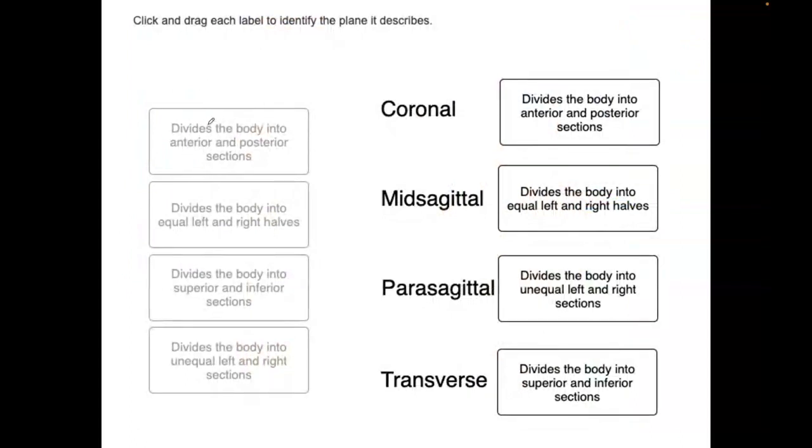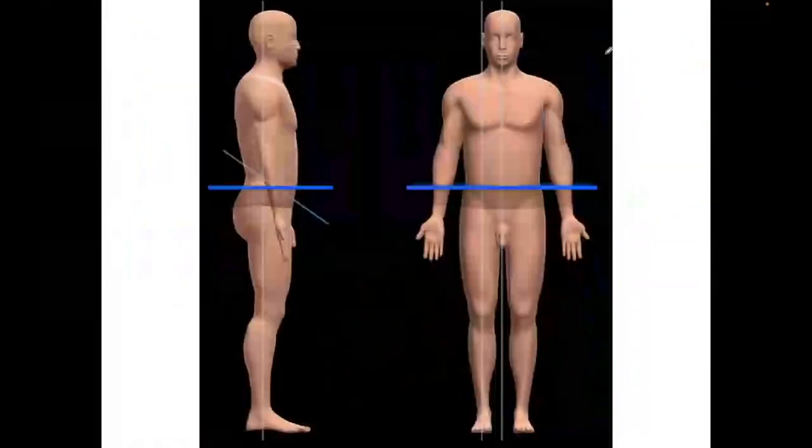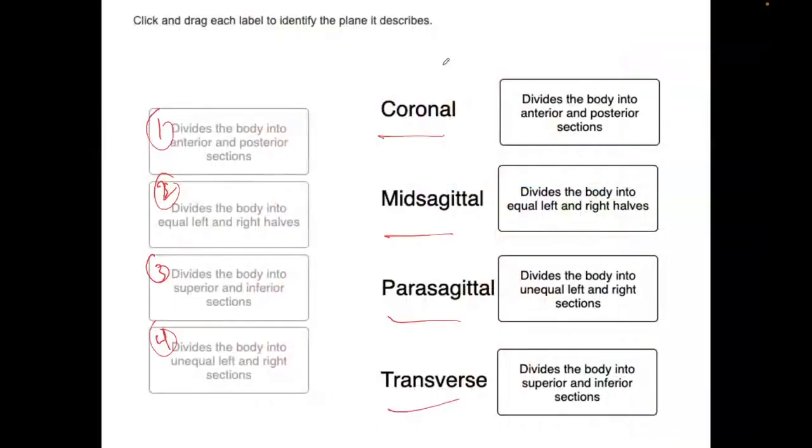Now we have a drag and drop. So they give you these one, two, four definitions, and now you're going to have to match up the terms with the definitions. So coronal, which goes across, same as the frontal, that's going to separate into a front and back half. So it divides the body into an anterior and posterior section.